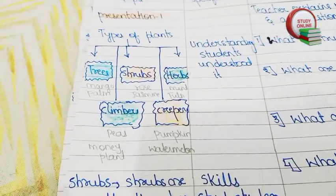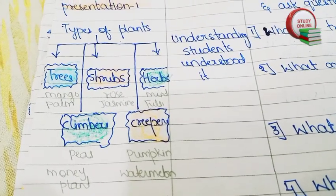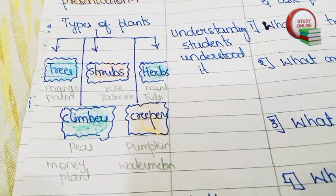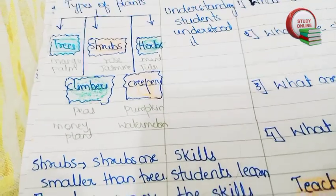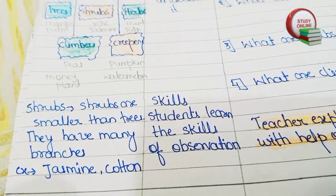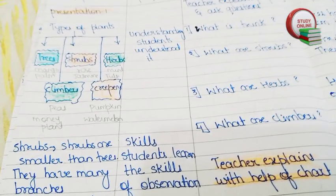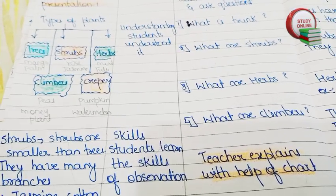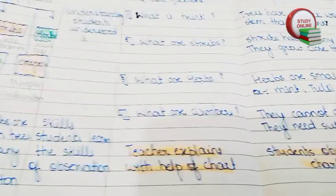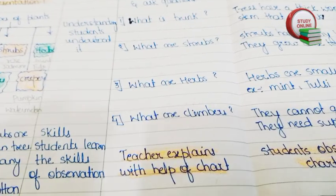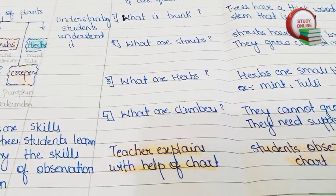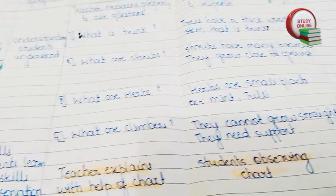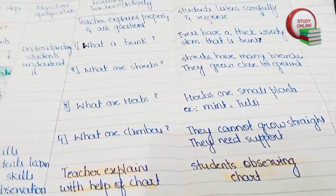Here you can see the presentation part — types of plants: trees, shrubs, herbs, climbers, creepers — and examples of all of these are also mentioned here. Here you can see the definition of shrubs. Here you can see objectives and specifications like understanding and skills. The teacher explains with the help of a chart, and students are observing the chart.